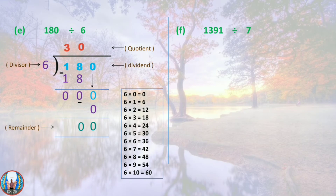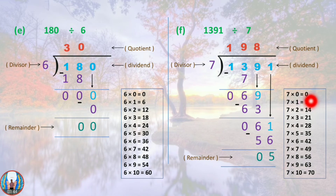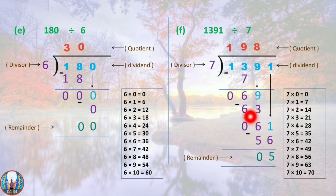Question F: 1391 divided by 7. Here 1391 is the dividend and 7 is the divisor. Since 1 is less than 7, we take 2 digits: 13. 13 falls between 7 and 14, so we take the lesser number, 7. 13 minus 7 gives remainder 6. Bring down the 9 to make 69. 69 falls between 63 and 70, so we take 63. 7 nines are 63; subtract to get remainder 6. Bring down the 1 to make 61. 61 falls between 56 and 63, so we take 56. 7 eights are 56; 61 minus 56 is 5. The quotient is 198 and the remainder is 5.